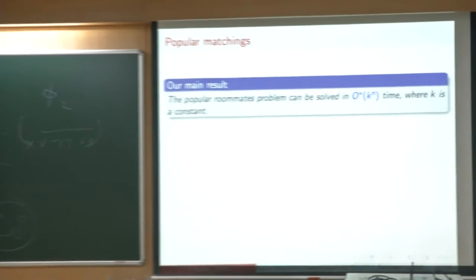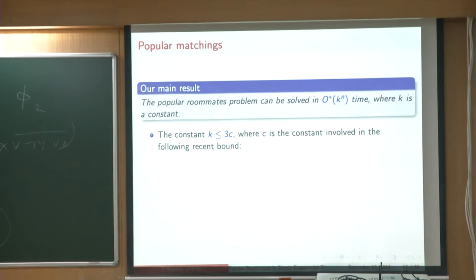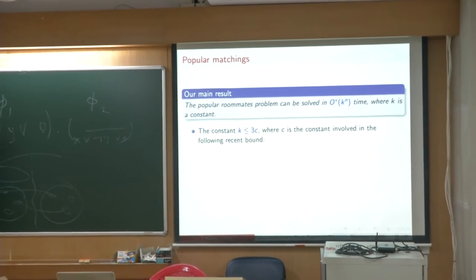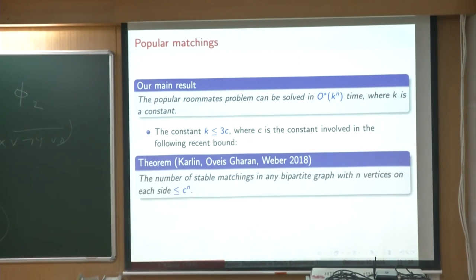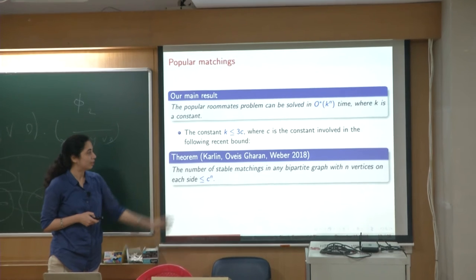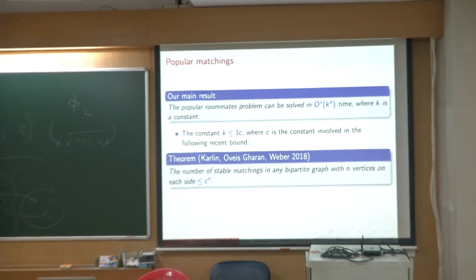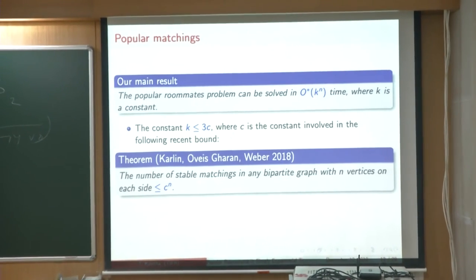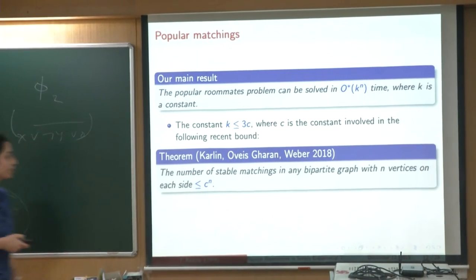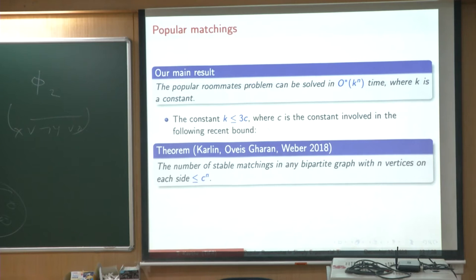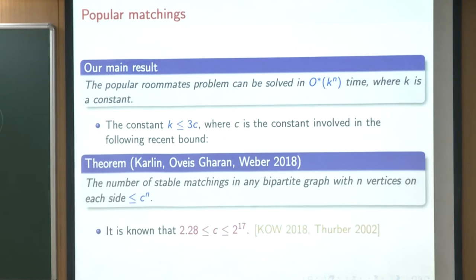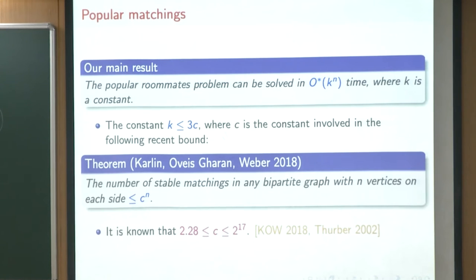The constant is unfortunately not too good. The constant k can be bounded by 3 times c, where c is a constant involved in a recent breakthrough result by Carlin et al., who showed that the maximum number of stable matchings possible in any bipartite graph with n vertices on each side is at most c^n. This was a long-standing open problem: can we bound the number of stable matchings in such a bipartite graph by an upper bound of the form c^n?